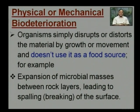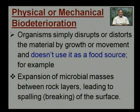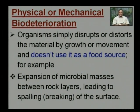The first type is physical or mechanical bio-deterioration. Here the organism simply disrupts or distorts the material by growth or movement; the organisms do not use the material as a source of food. One example is when microbial masses like algae, fungi, lichens, and other organisms grow between rock layers or cracks, leading to spalling — that is, breaking of the rock surface. Another example visible in the figure is a ship on which various molluscs are attached.